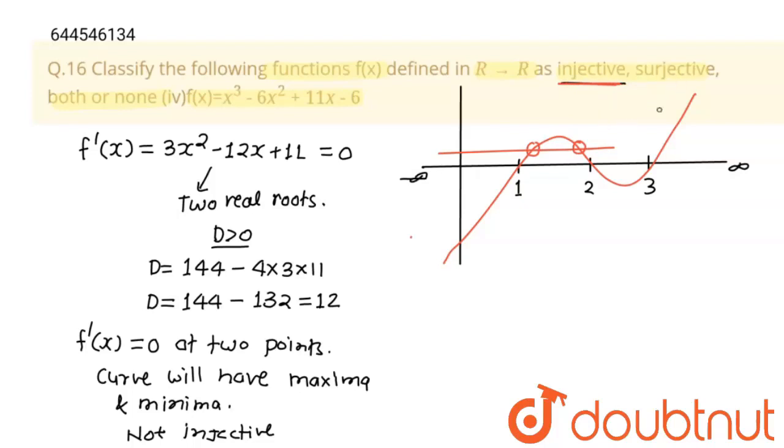Now surjective function. See, this cubic equation is extended on y-axis from minus infinity to infinity. And extension of graph on y-axis gives range. So range of this function is minus infinity to infinity. And here this defines the codomain of function, which equals codomain. Codomain is also minus infinity to infinity. Range equals to codomain means this is surjective.